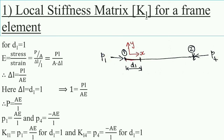D1 is the displacement occurring at node 1. Assume only D1 is occurring — all other five displacements are arrested. For displacement D1 to occur, let the force acting be P1 at node 1, acting in the positive x direction. For equilibrium of the member, an equal and opposite force P4 acts at node 2. Since D1 and D4 are axial displacements, we name the corresponding forces P1 and P4.